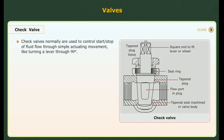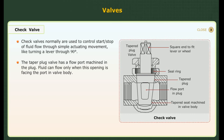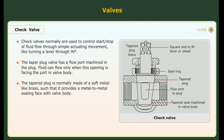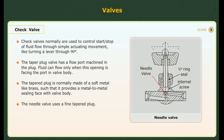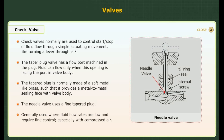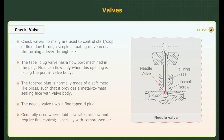Check valve. Check valves normally are used to control start or stop of the fluid flow through simple actuating movement, like turning a lever through 90 degrees. The taper plug valve has a flow port machined in the plug. Fluid can flow only when this opening is facing the port in the valve body. The tapered plug is normally made of a soft metal like brass, such that it provides a metal-to-metal sealing face with the valve body. The needle valve uses a fine tapered plug, generally used where fluid flow rates are low and require fine control, especially with compressed air.